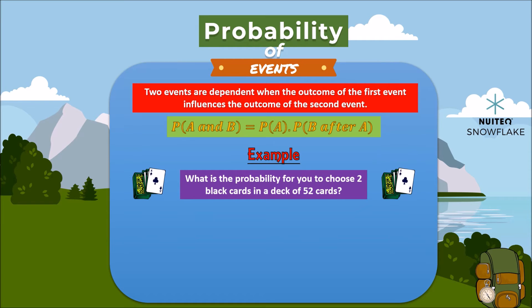What is the probability for you to choose two black cards in a deck of 52 cards? As you might know, a deck of cards has 26 black and 26 red cards. The probability of choosing a black card randomly is 26 over 52. If we simplify, we get a half.